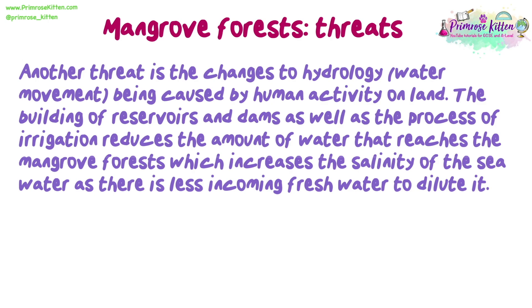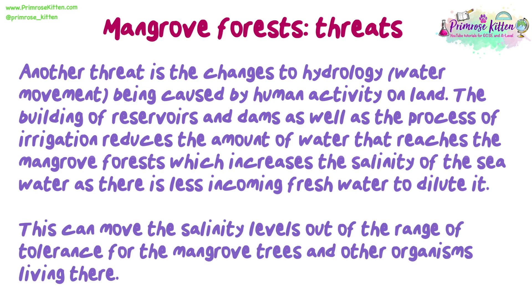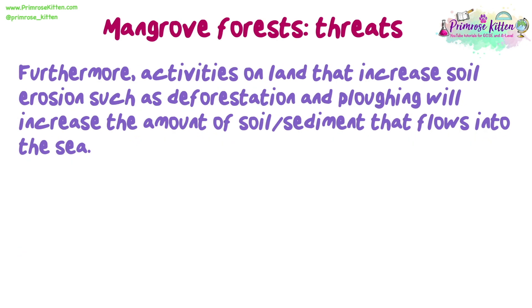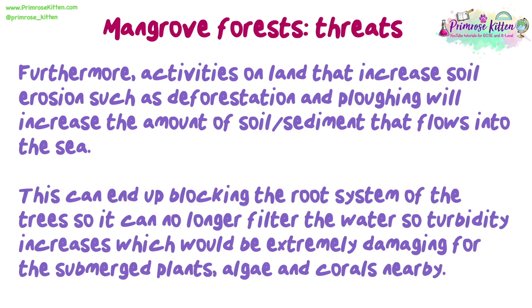Another threat is changes to hydrology — the movement of water — caused by human activity on land. The building of reservoirs and dams, as well as irrigation, reduces the amount of water that reaches the mangrove forests, which increases the salinity of seawater as there is less incoming fresh water to dilute it. This can move salinity levels outside the range of tolerance for the mangrove trees and other organisms. Furthermore, activities that increase soil erosion — such as deforestation and ploughing — increase the amount of sediment flowing into the sea, which can block the root system so it can no longer filter the water, increasing turbidity, which is extremely damaging for submerged plants, algae and nearby corals.